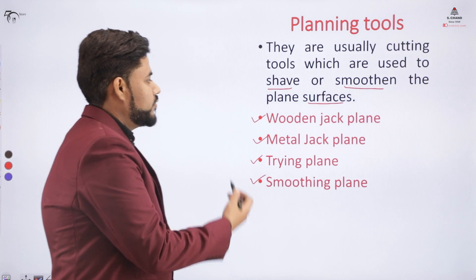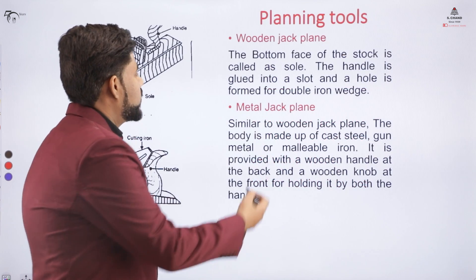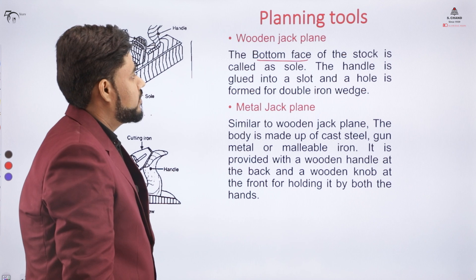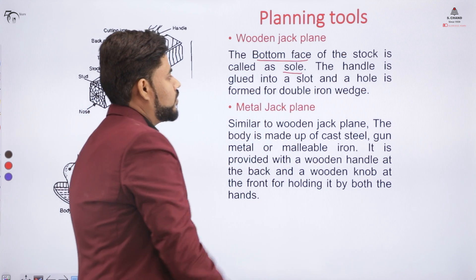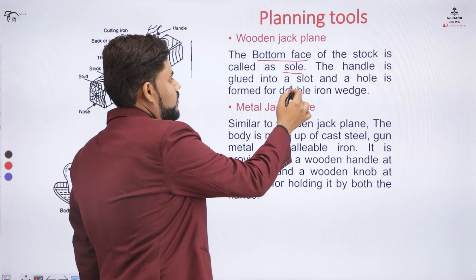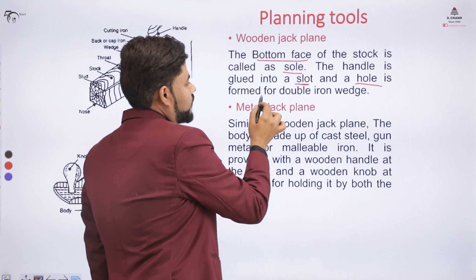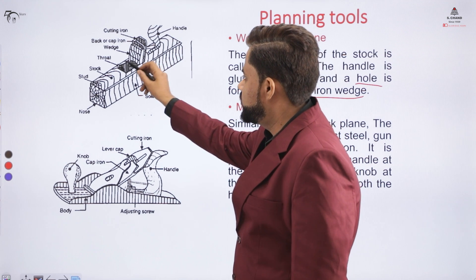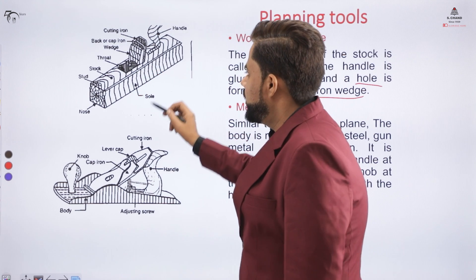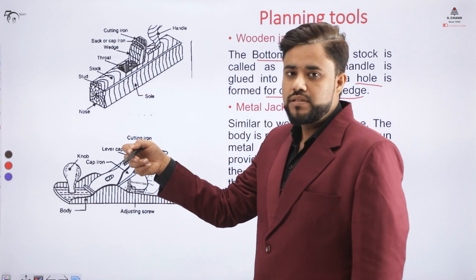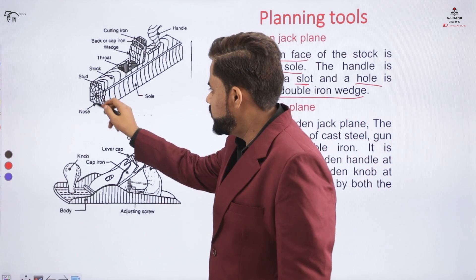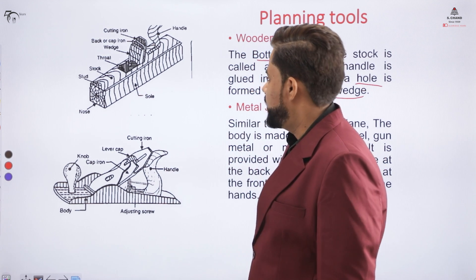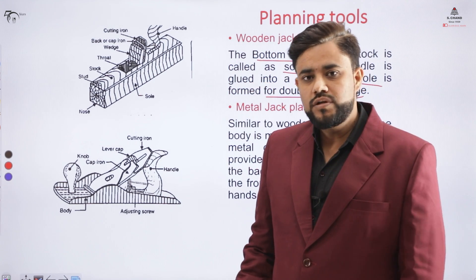We will cover the wooden jack plane and the metal jack plane in detail. In the wooden jack plane, the bottom face of the stock is called the sole, and the handle is glued into the slot. A hole is formed for the double iron wedge. The handle is glued with the help of a throat that contains a blade used to shave the surface of the wood. The front part is called the nose, and the bottom face is the sole. The material of this instrument is wood.